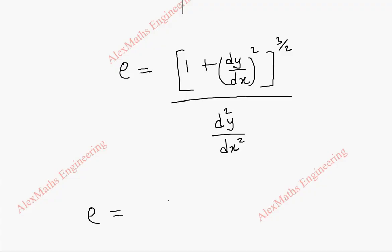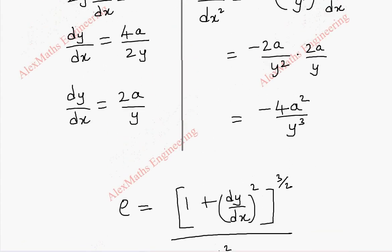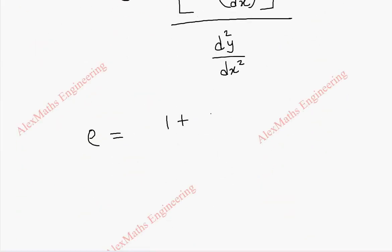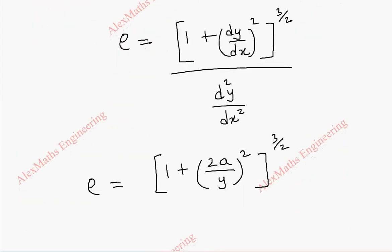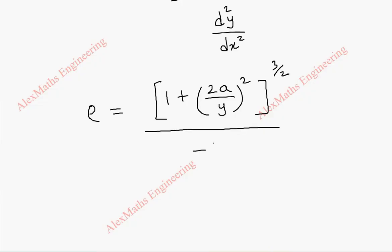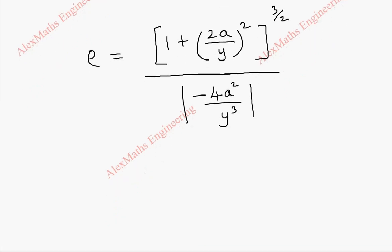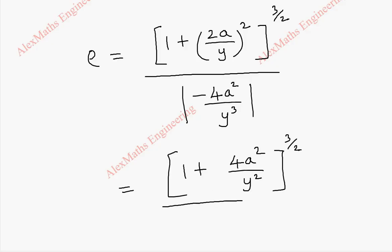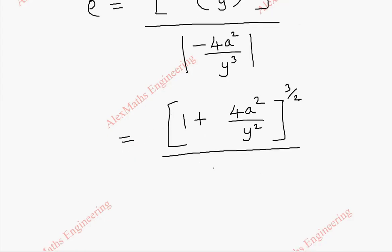So rho equal to 1 plus dy by dx which is 2a by y, so it will become 2a by y whole square, with whole power 3 by 2. And in the denominator, it is minus 4a square by y cube, so we take minus 4a square by y cube with magnitude. In the numerator part, it is 1 plus 4a square by y square, and we have whole power 3 by 2.